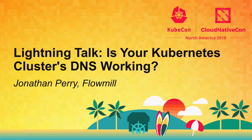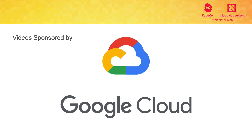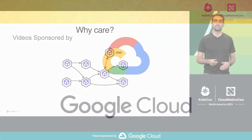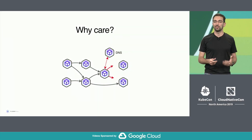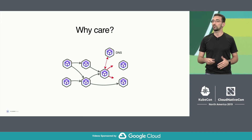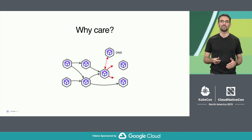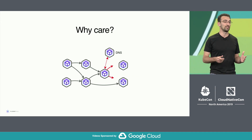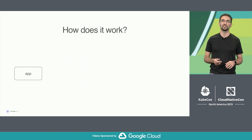DNS is used extensively in Kubernetes service discovery. So when it fails, pods cannot reach other pods, cannot reach external APIs or managed services, and the system fails.